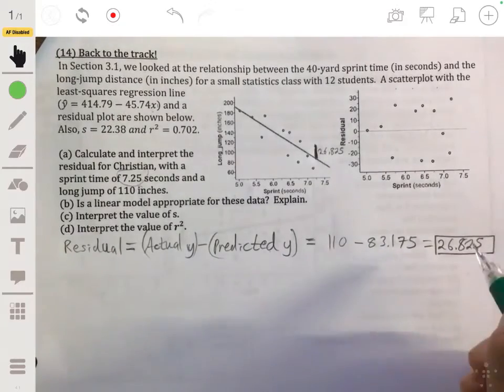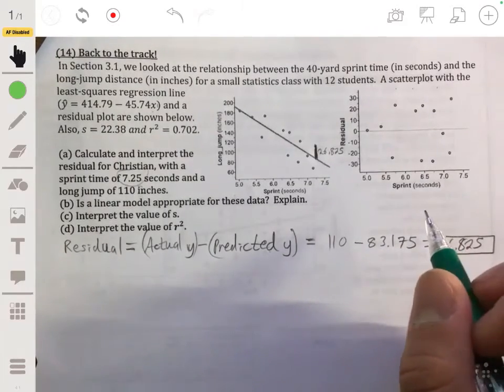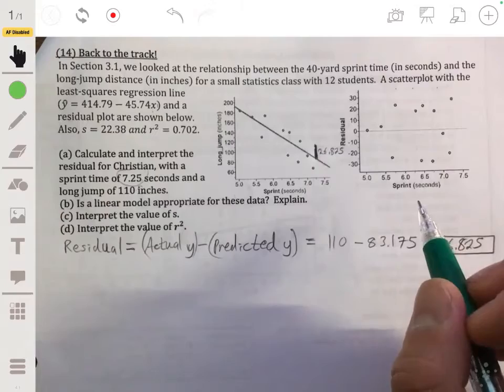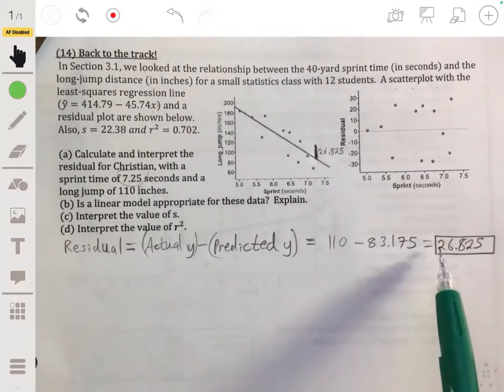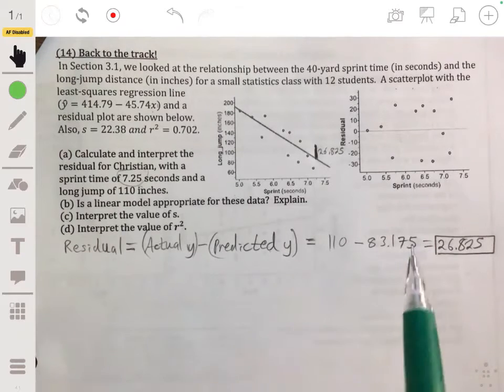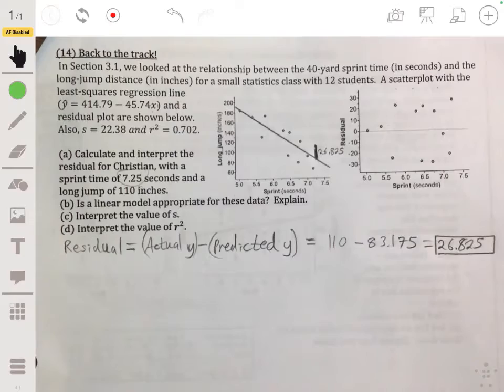So what does this mean specifically? This is saying that what happened is that Christian actually jumped longer than what we thought. He jumped 26.825 inches more than what we would predict by the least squares regression line. Good for him, what a champ.